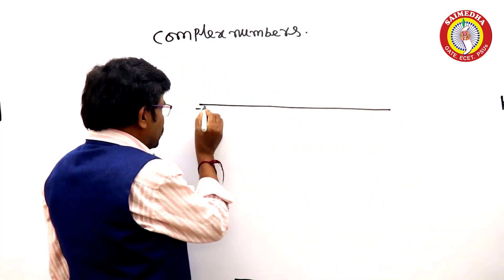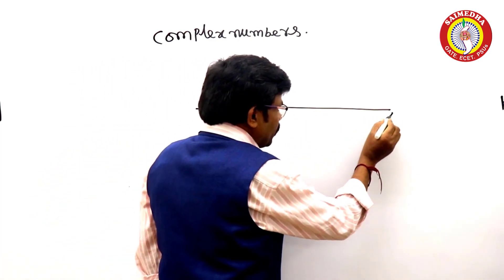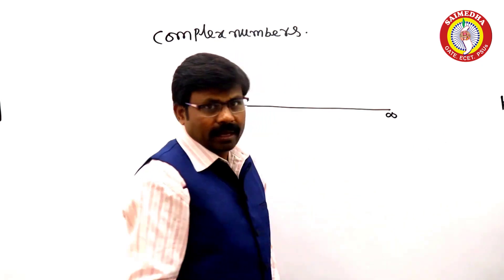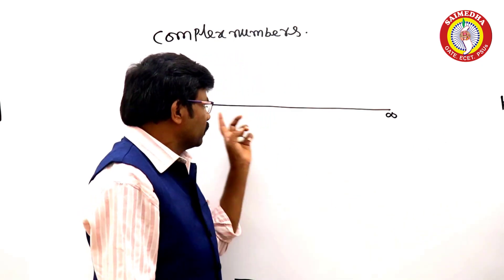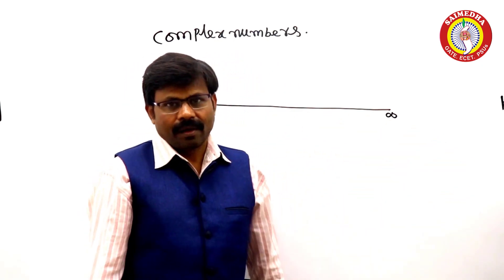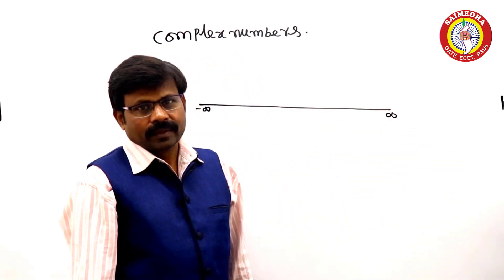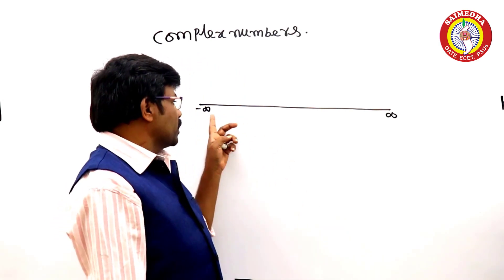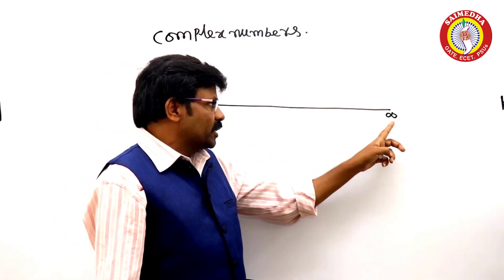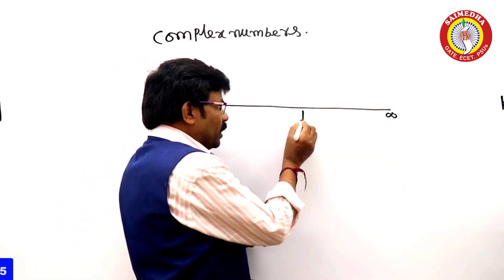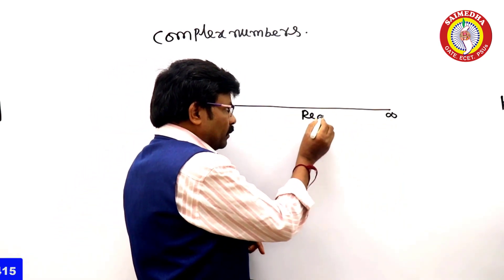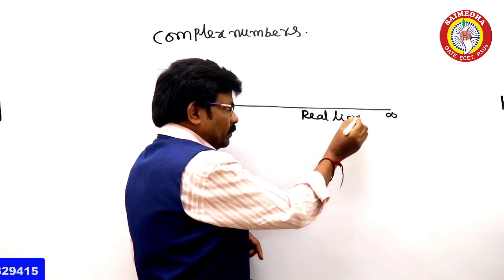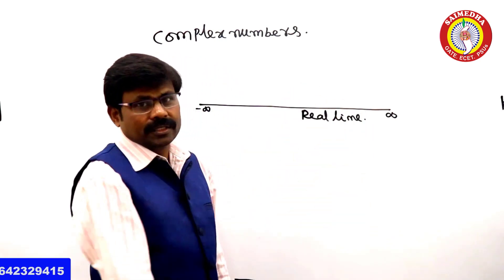From minus infinity to plus infinity, this is one dimension — the real line. Minus infinity to plus infinity, it is a real line. These are real numbers.